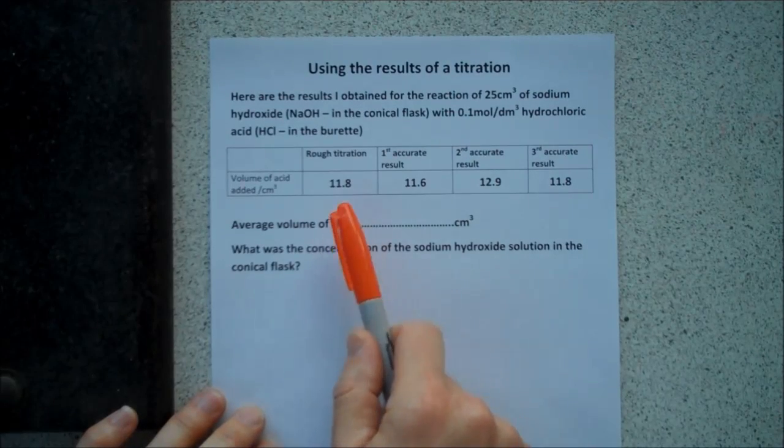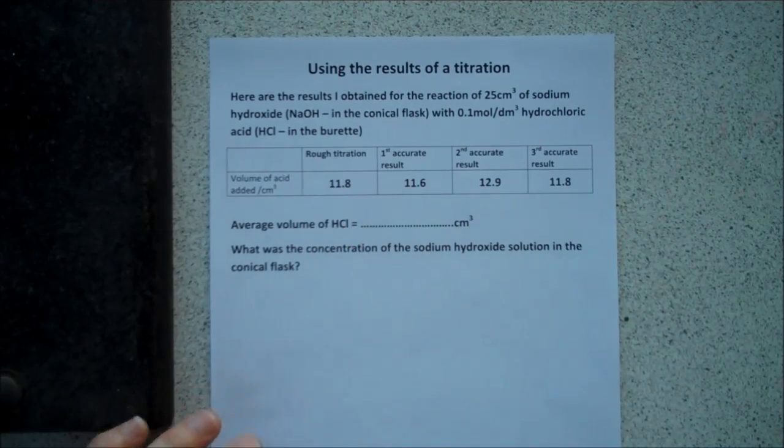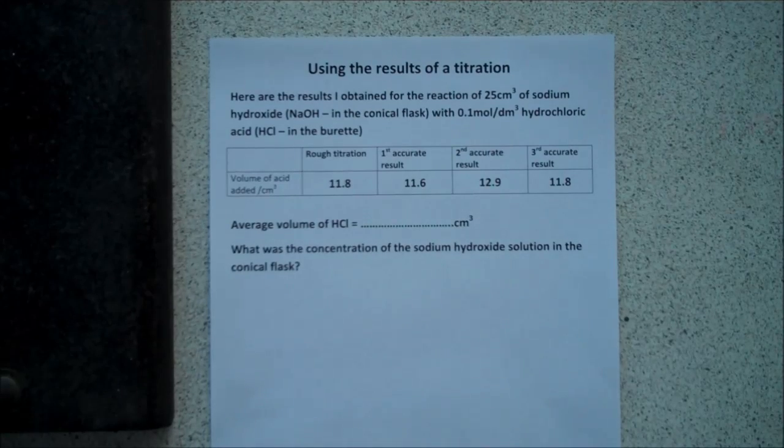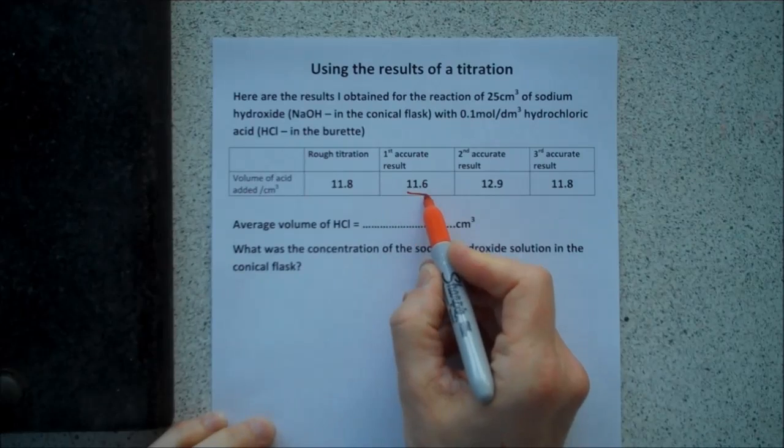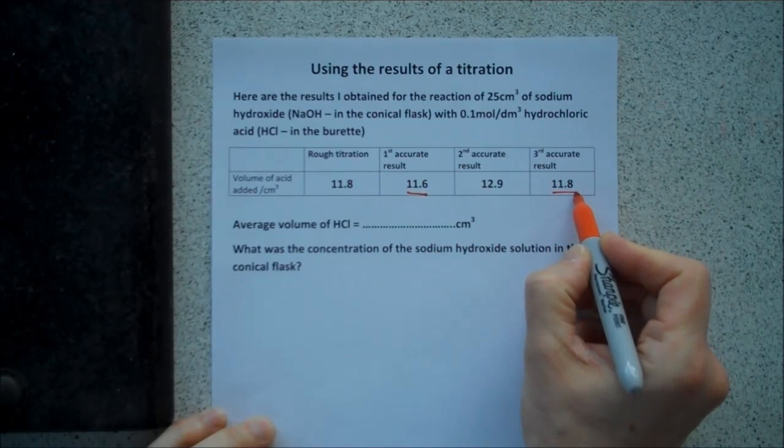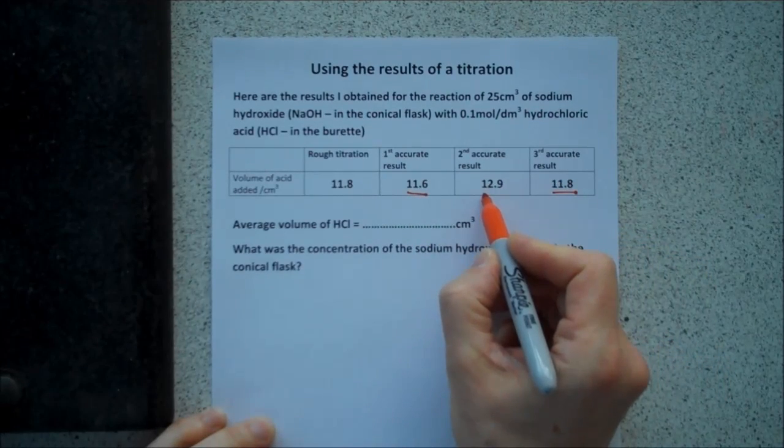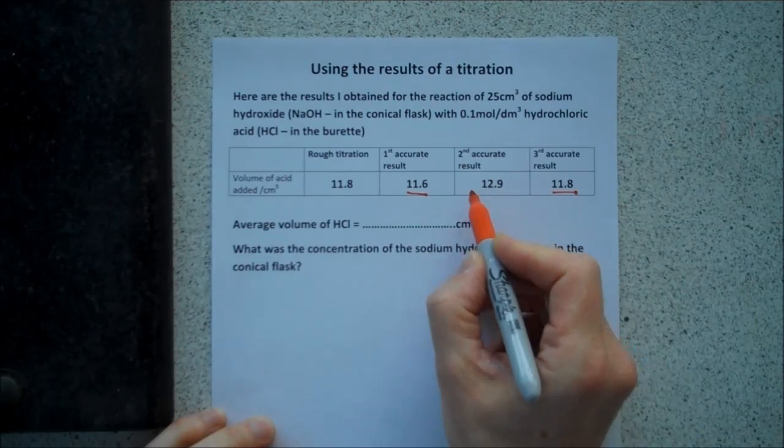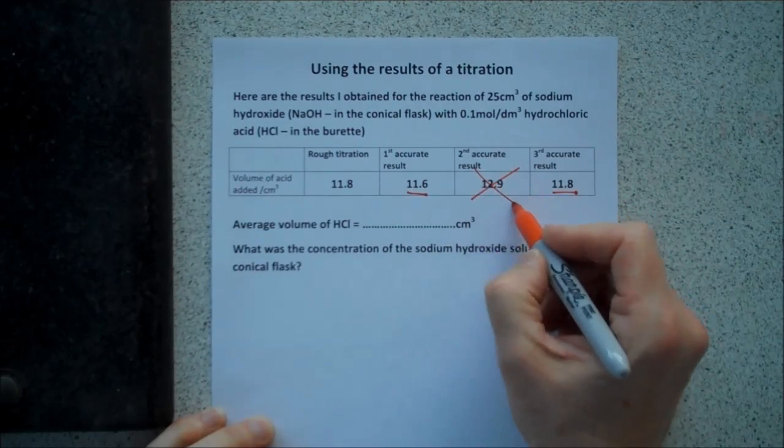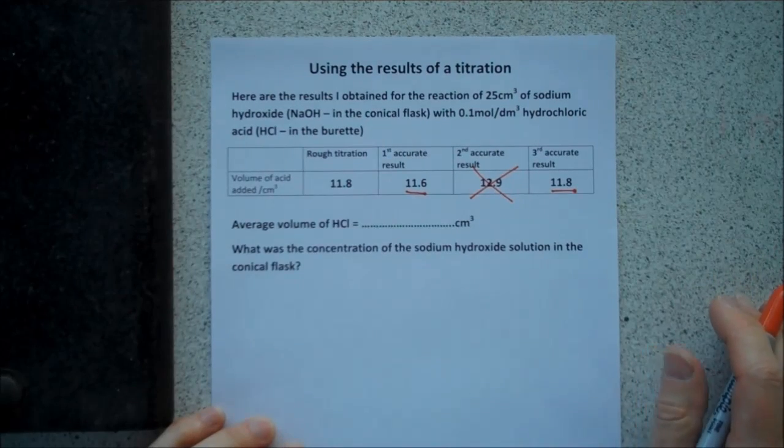Now, this is pretty straightforward. I'm not going to use the rough result, because that was rough and ready. I just did it in a hurry. It's not very accurate. The first accurate result was 11.6. My third one was 11.8, but my second one was 12.9. Now, that's quite a lot different from the other two, so I'm going to ignore it.